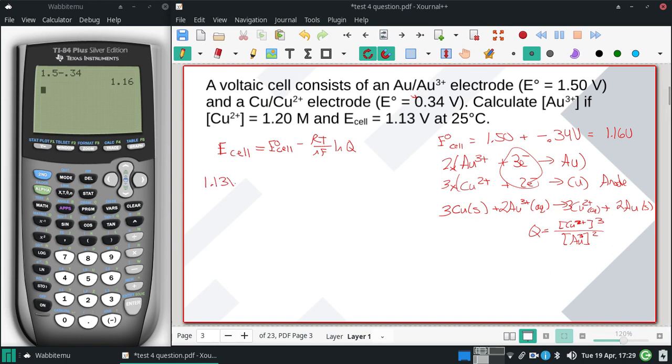I have the 1.13 volts for my E of the cell, 1.16 volts for the E° minus the R. And I'm not going to write it out because I'm going to run out of space otherwise, but it's that 8.314. The temperature will be 298 Kelvin. The n is going to be 6 moles of electrons, and I'm just going to write F for Faraday. And then my Q.